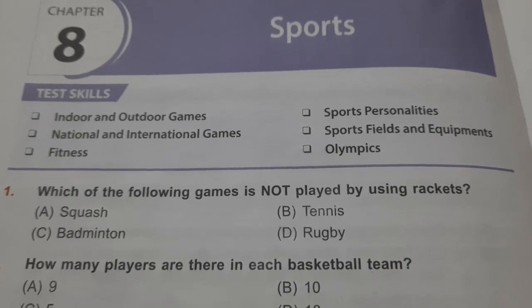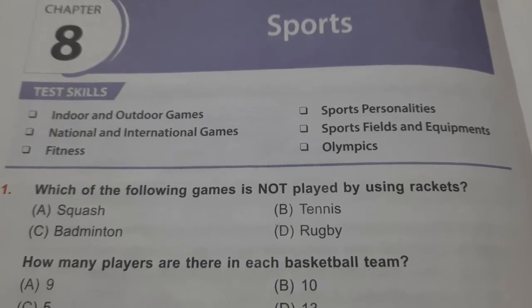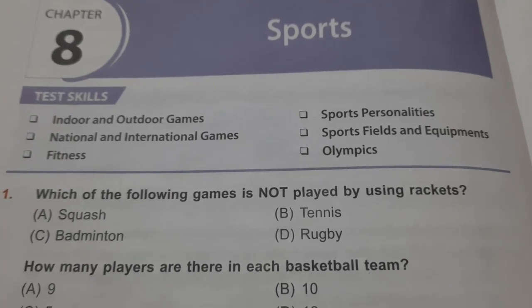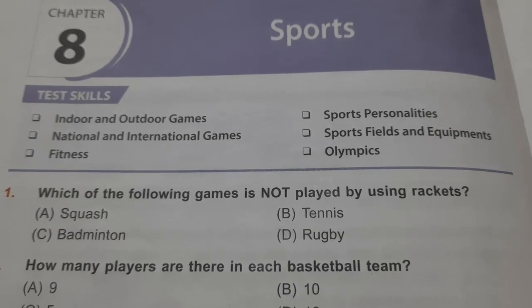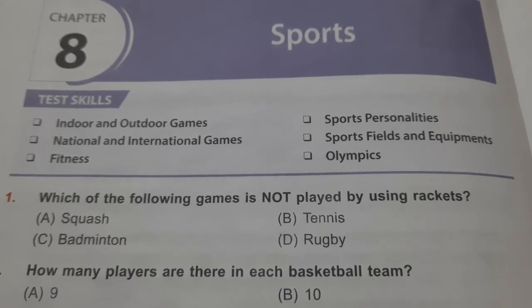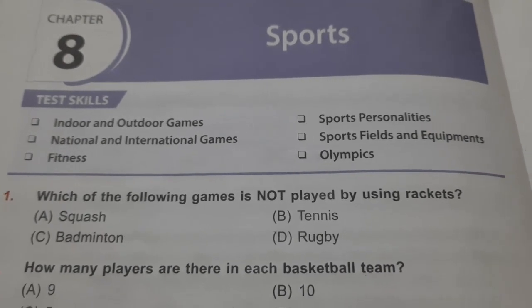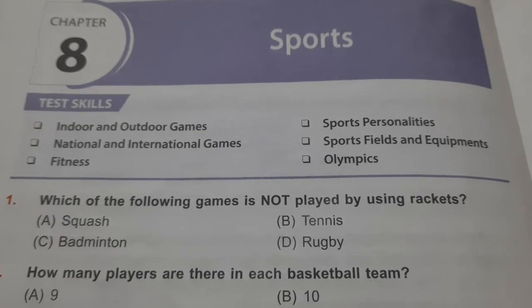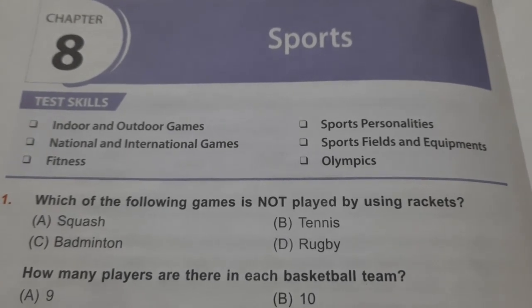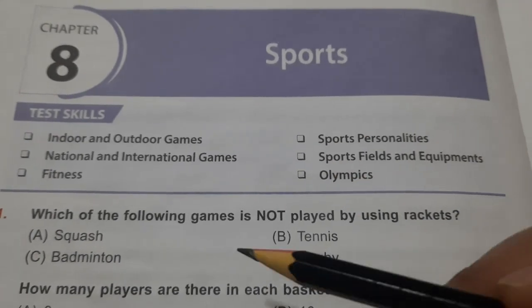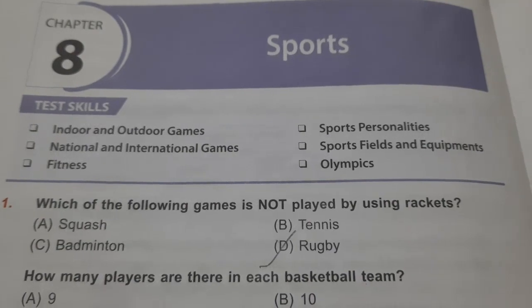So let's get started with our chapter. Question 1: Which of the following games is not played using rackets? We play tennis using a racket. Squash is also played using a racket — ball ko zore se squash kiya jata hai. Badminton is also played using a racket. It is rugby which is played using a ball, not a racket. So please tick option D as the answer.